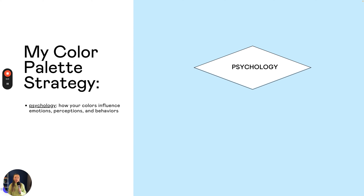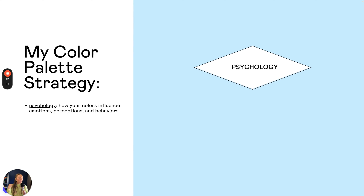I have a unique color palette strategy with three components. The first is psychology — how your colors influence emotions, perceptions, and behaviors. When building a palette, how do you want your customers to feel or act? A bold red could encourage action, while a combination of light green, light blue, and dusty jade green could evoke a completely different feeling. We'll cover the difference between color psychology and color palette psychology in another video, but both are really important and psychological influences are not to be ignored.